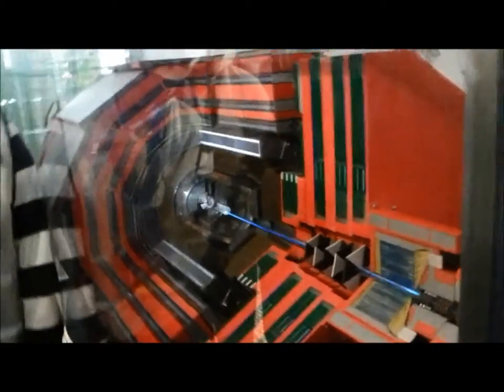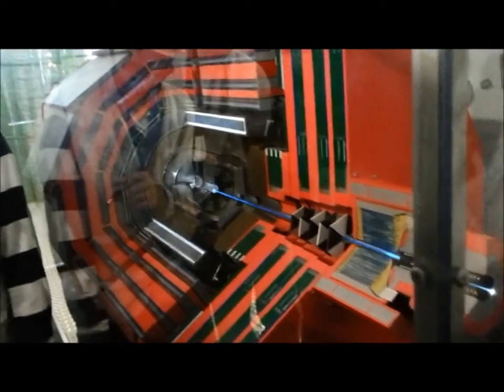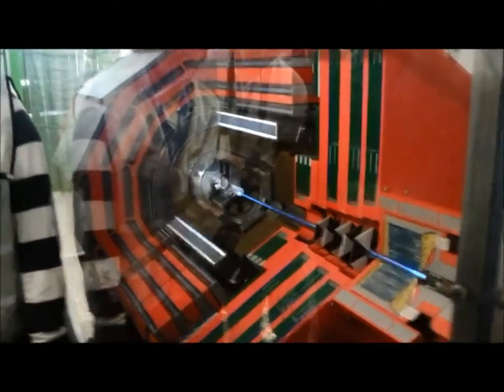Then we have the magnet superconductor. It is 6 meters in diameter, 12 and a half meters long. We have the tracker chamber, then we have the superconductor coil.